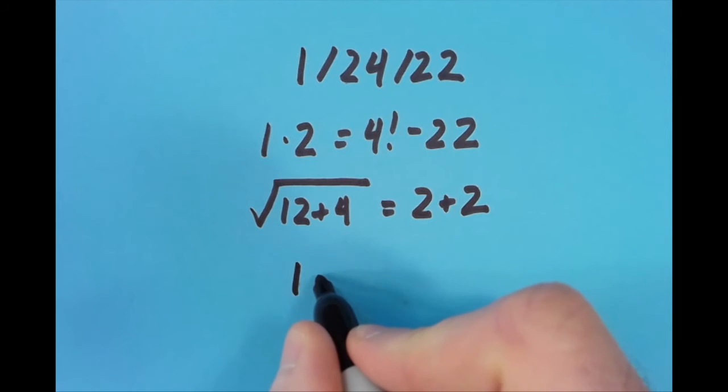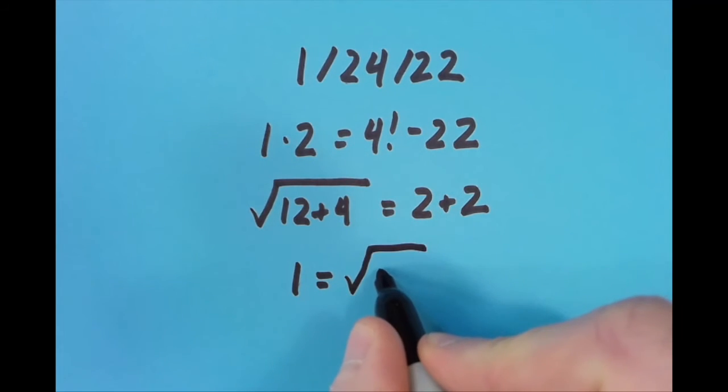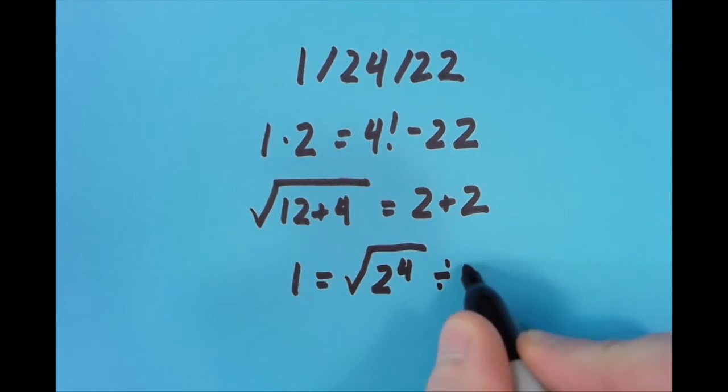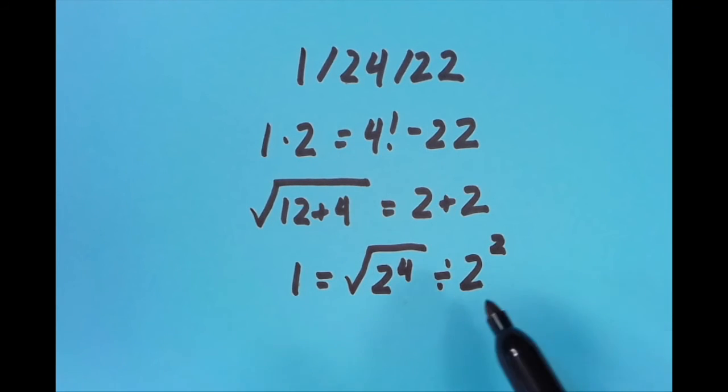Then I put the equal sign in a different place. I put it in the first position, and I did 1 equals the square root of 2 to the fourth power divided by 2 squared. So 2 to the fourth is 16, the square root of 16 is 4, 2 squared is 4, so 4 divided by 4 equals 1.